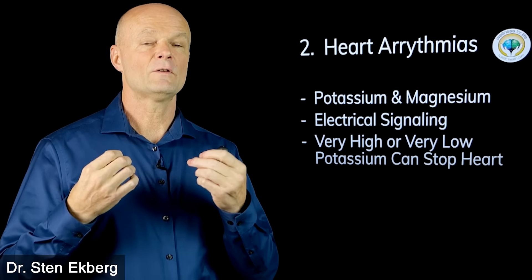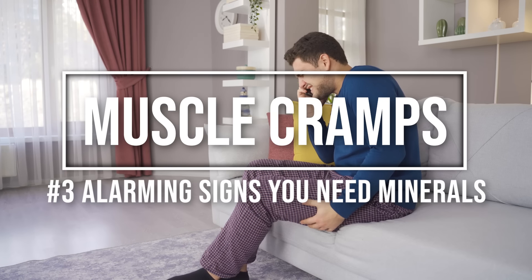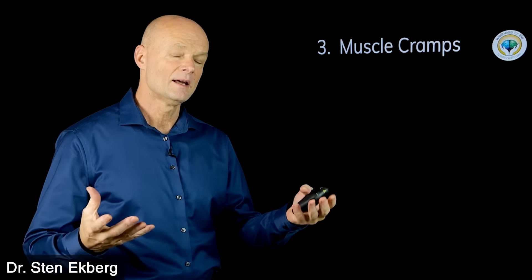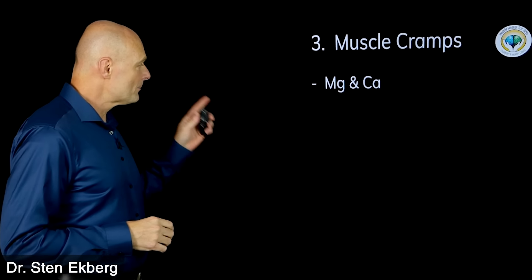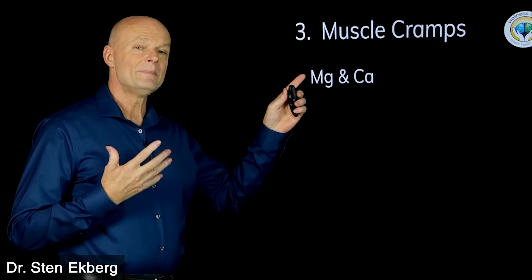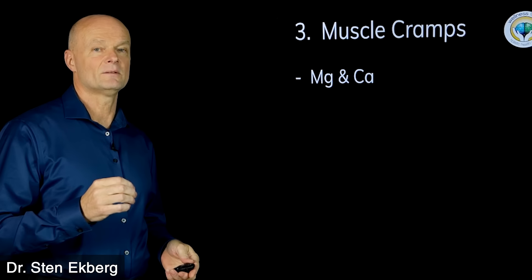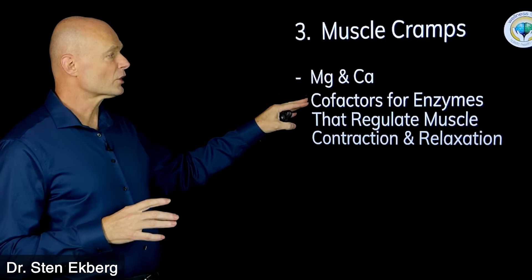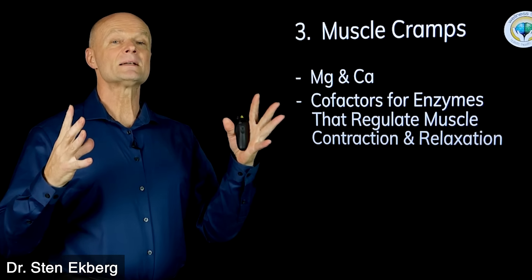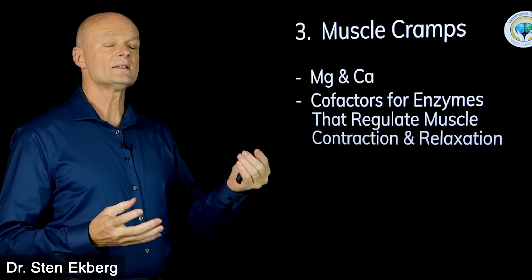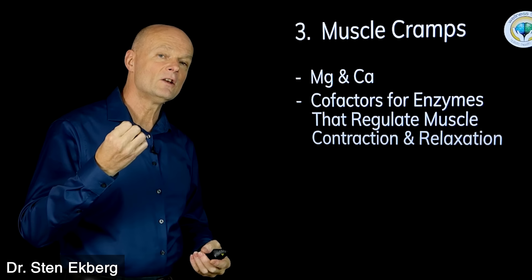Number three is muscle cramps. This is probably something everyone has experienced sometime. A lot of athletes will know that after a hard workout where you lost a lot of fluids and electrolytes, you get more muscle cramps. There could be multiple minerals involved, but it's primarily due to magnesium and calcium. Both of those are cofactors for the enzymes that make muscles contract but also that make muscles relax. If you lose these, then the muscle might contract and then not let go.